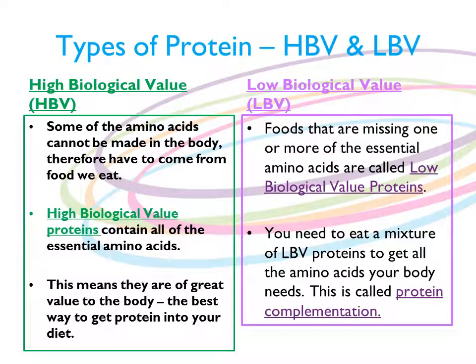Moving on to types of protein. We know we've got HBV and we have LBV. Some of the amino acids can't be made in the body, therefore they have to come from the food we eat. HBV proteins contain all of the essential amino acids.